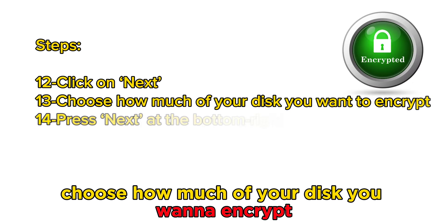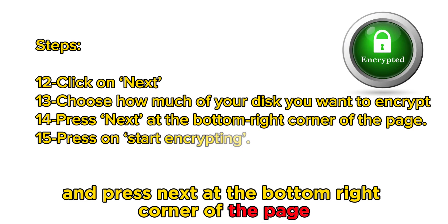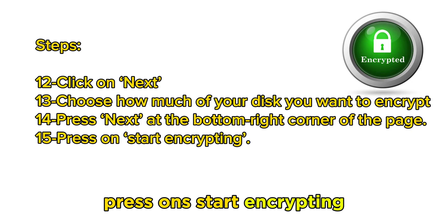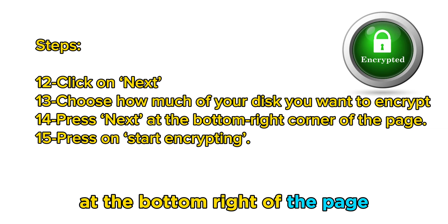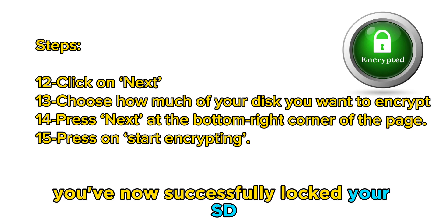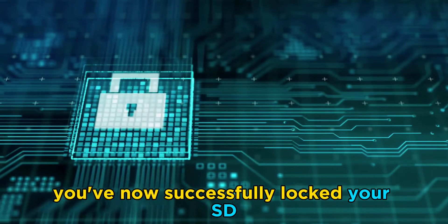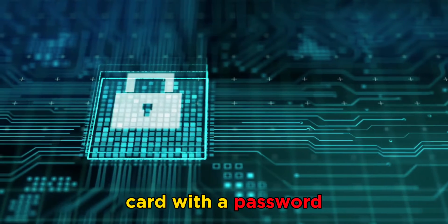Choose how much of your disk you want to encrypt and press Next at the bottom right corner of the page. Press on Start Encrypting at the bottom right of the page to lock your SD card with a password. You've now successfully locked your SD card with a password.